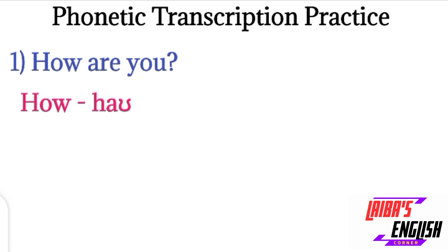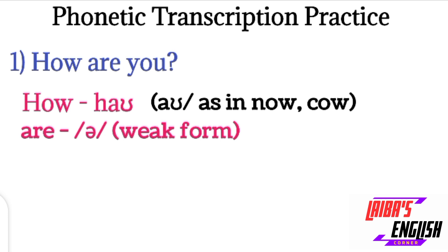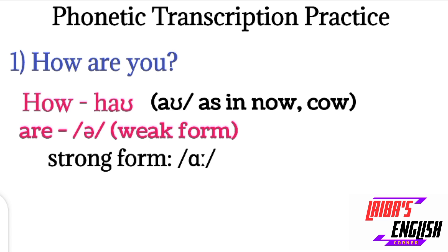How are you? The first word is 'how.' The 'ow' sound is at the start, so we will write like H and the 'ow' sound, like in 'now,' like in 'cow.' Then 'are,' then 'you.' Some words are weak forms, some are strong forms. Whenever you speak this sentence fluidly — 'how are you?' — 'are' will not be pronounced as a strong form; it will be pronounced as a weak form.